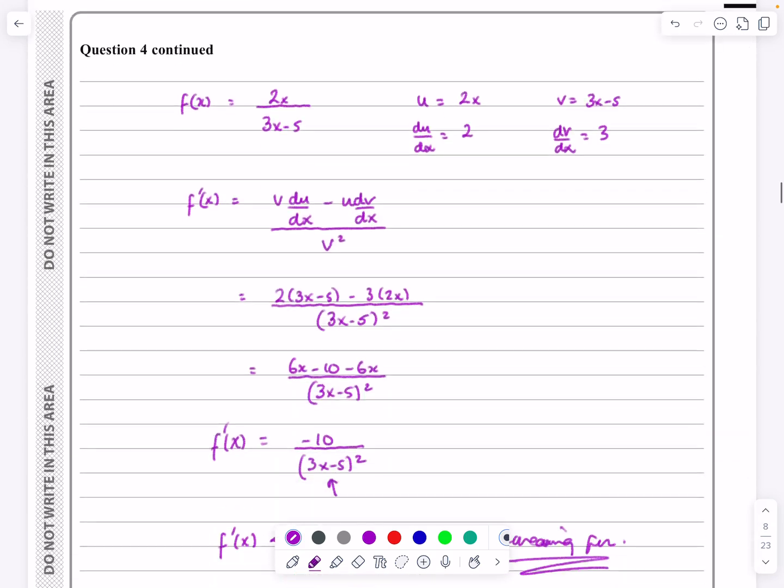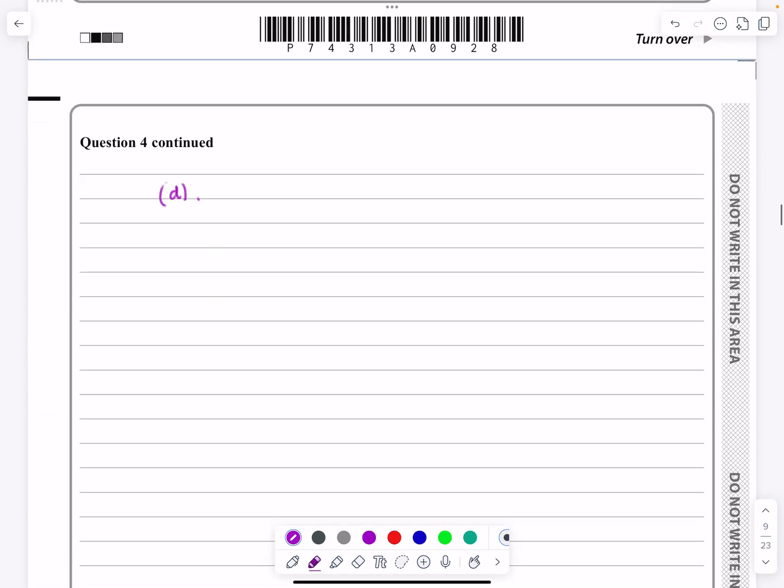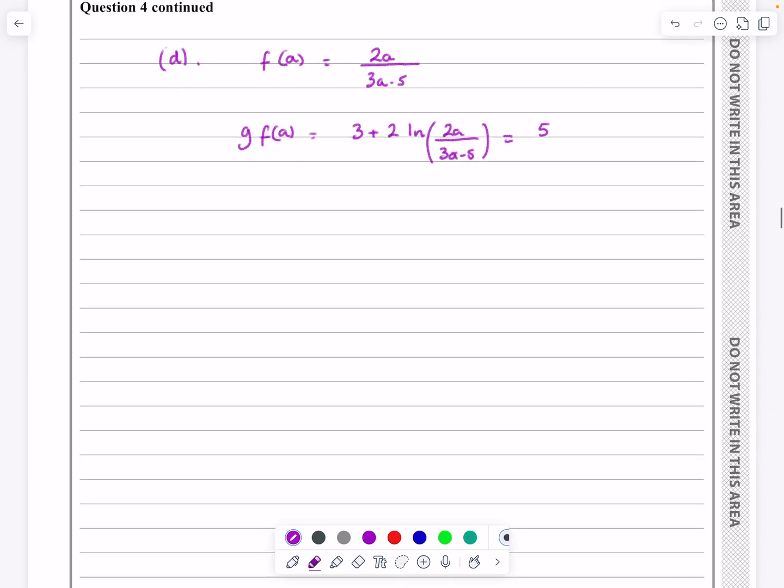Okay, well let's have a go at doing that then. So we had that fa would be equal to 2a over 3a minus 5, obviously. So gfa means do g with that as my input, so 3 plus 2 log and then 2a over 3a minus 5. We want that to be equal to 5. Okay, so we've just got to see if we can solve this.